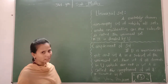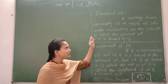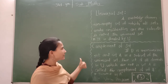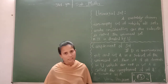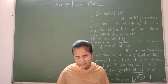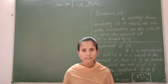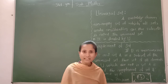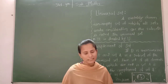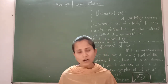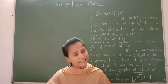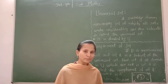Now we will see the universal set. A suitably chosen non-empty set of which all sets under consideration are subsets is called the universal set, and it is denoted by U. For example, our school is the best example — from 1st to 10th standard, the school is the universal set for all these classes. Similarly, in our country, villages, towns, and cities are all part of the country, so India is the universal set for each of them.